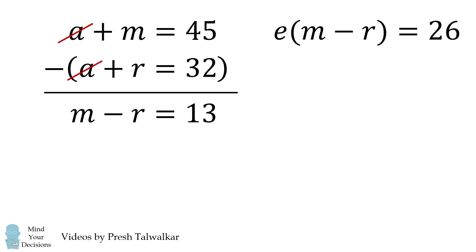We'll put this equation to the side, and now we'll consider these two equations. Let's subtract the second equation from the first. This will cancel out the variable a. We then have m minus r is equal to 13.